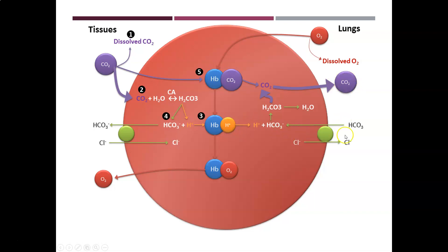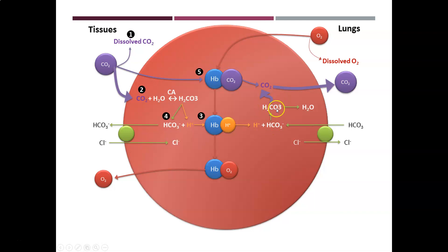Or, the CO2 that was transported as bicarbonate re-enters the red cell at the lungs, combines with a hydrogen ion that was tagged on hemoglobin, and when bicarbonate enters, chloride leaves to maintain electrical neutrality. Bicarbonate picks up the hydrogen ion to become carbonic acid, which then dissolves into CO2 and water, and the CO2 is breathed out.